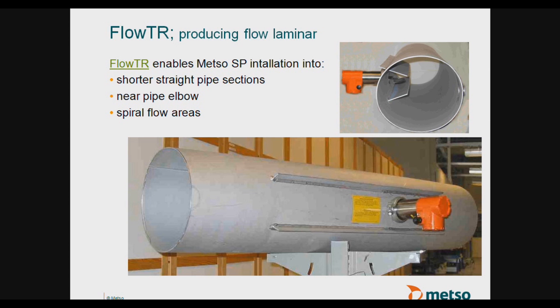Now what happens if we do not have enough straight pipe requirements? Metso offers a FlowTR turbulence reducing vein. Metso's FlowTR veins can be installed in an existing pipe or we can supply the spool sections here. Typically these veins are about 36 inches long. If you don't have enough straight pipe requirements with just the pipe, these veins allow you to get laminar flow without the required straight pipe.